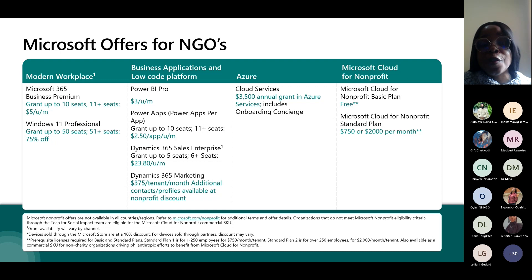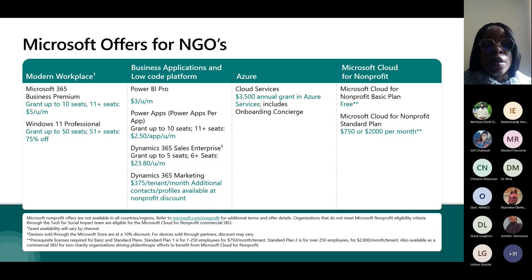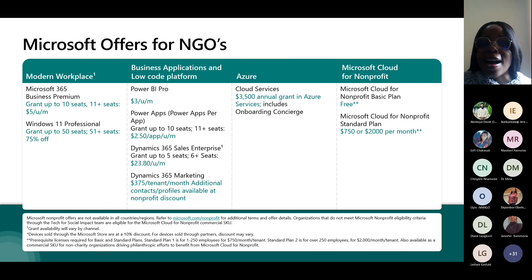For Azure, you have $3,500 credits given to you annually to host your applications in the cloud or do anything you want on Azure cloud solutions. We also have the Microsoft Cloud for Nonprofit Basic Plan, which is totally free and includes Outlook, Microsoft Word, PowerPoint, and Excel. Then we have the Microsoft Cloud for Nonprofit Standard Plan, which is $750 to $2,000 per month depending on your size.